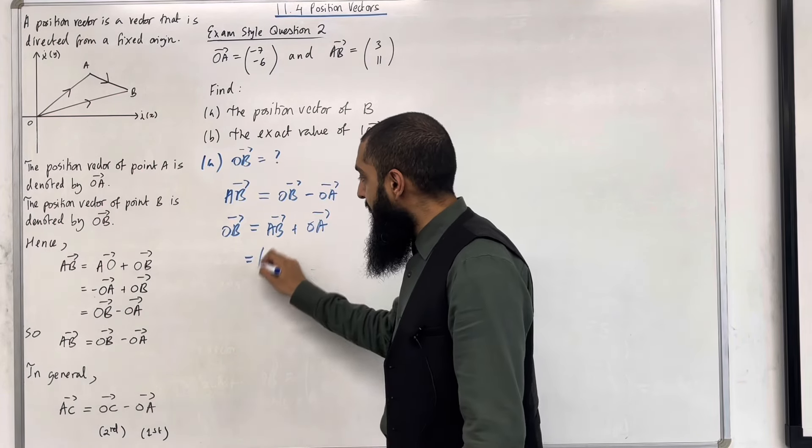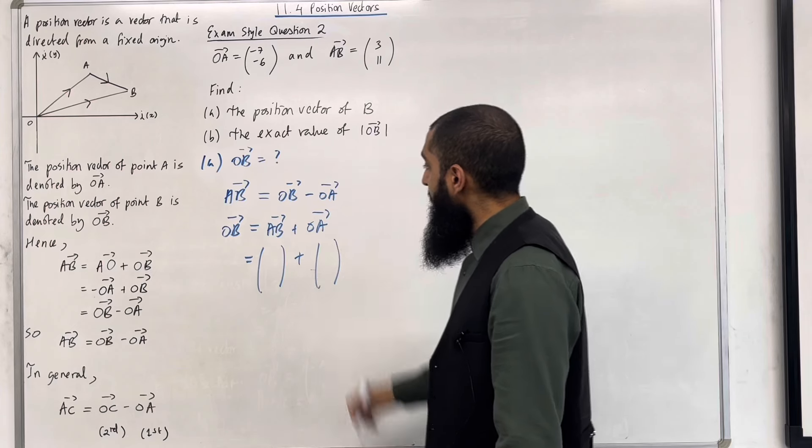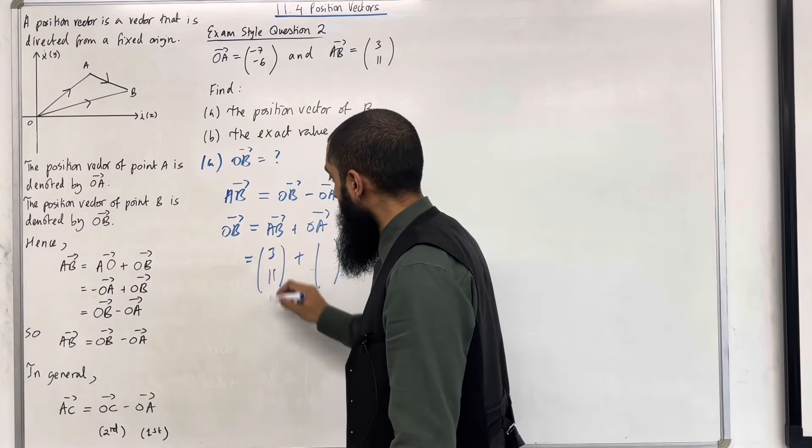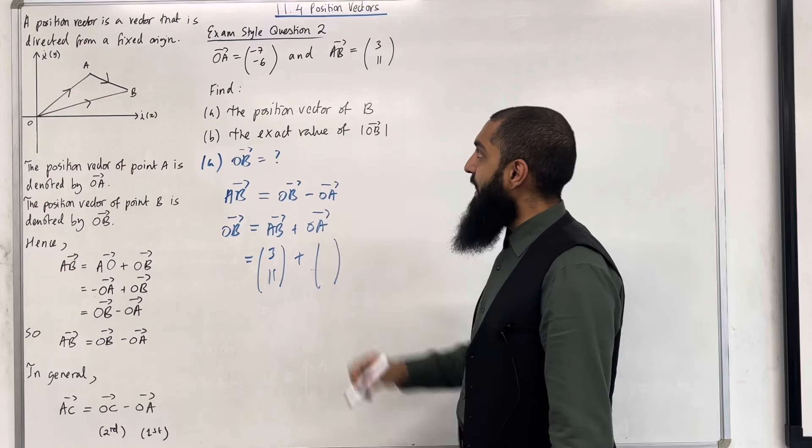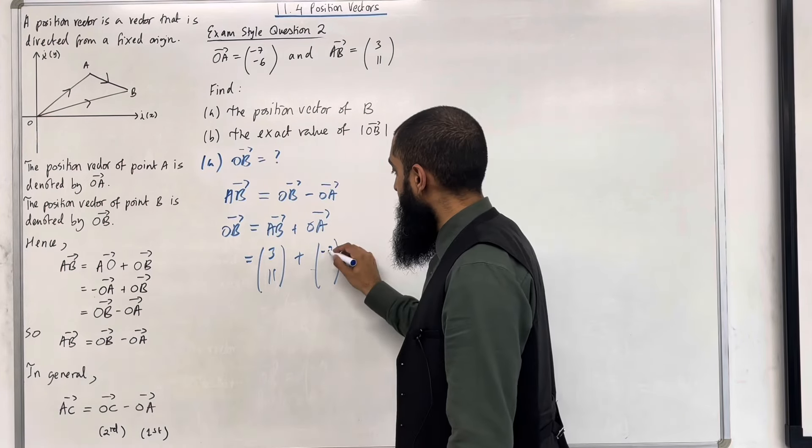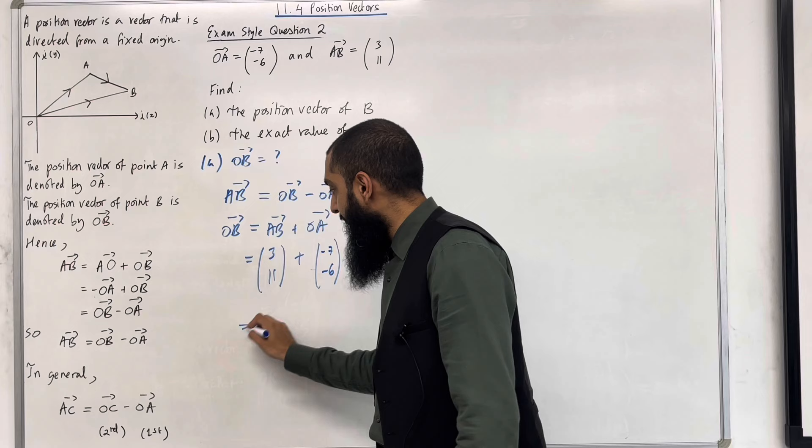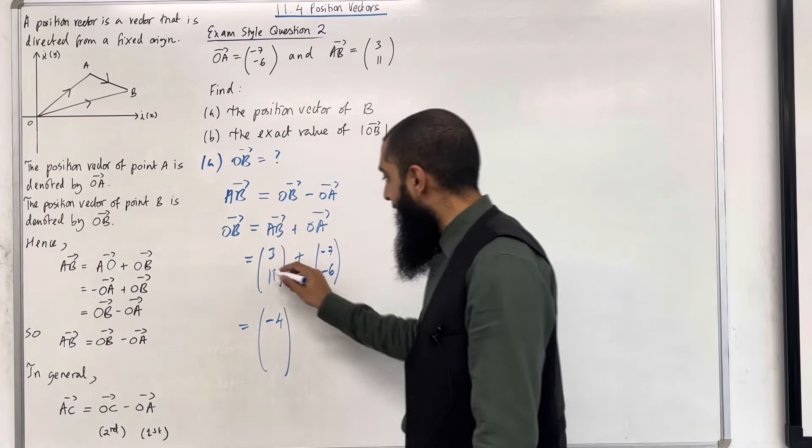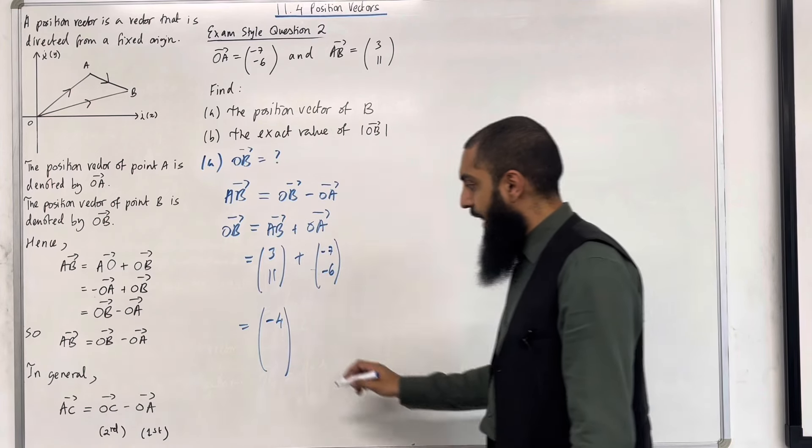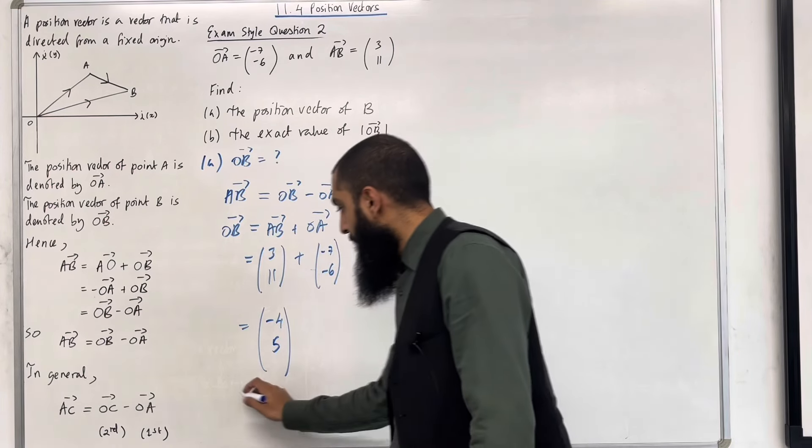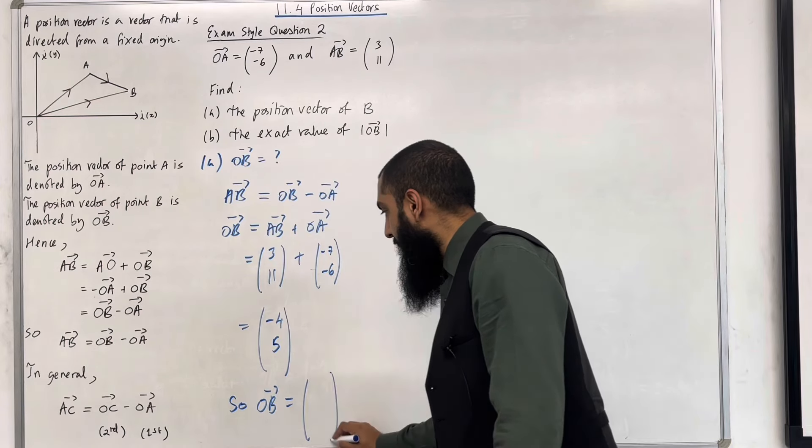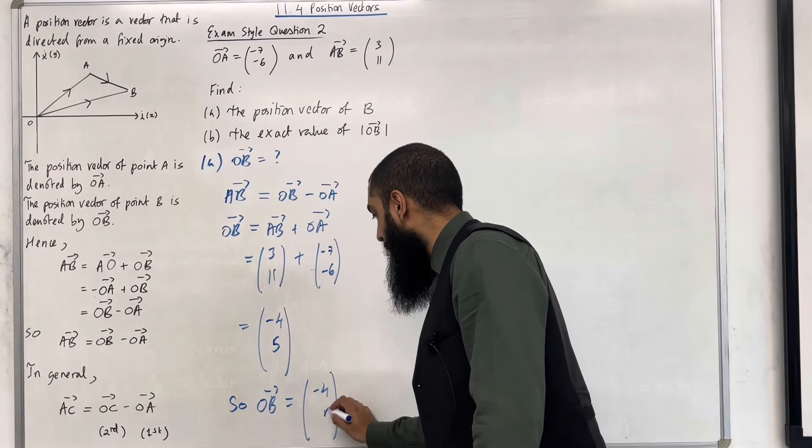So now we can input the vectors. We know that the vector A to B is 3 and 11. The vector O to A is minus 7 and minus 6. 3 take away 7 is minus 4. And 11 take away 6 is 5. Okay, so we know that the vector O to B as a column vector is therefore minus 4 and 5.